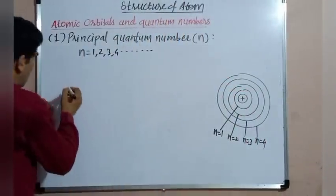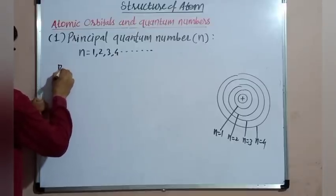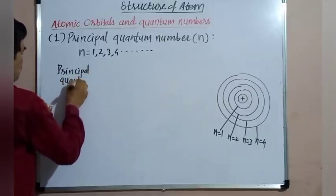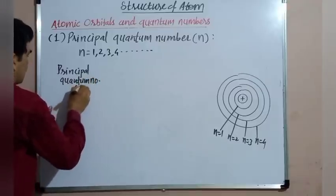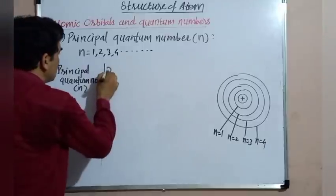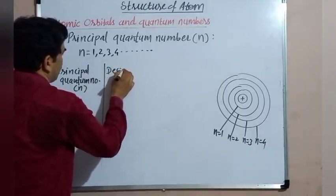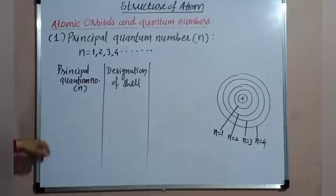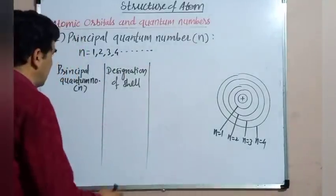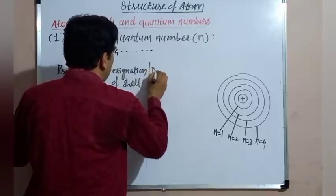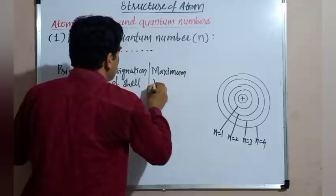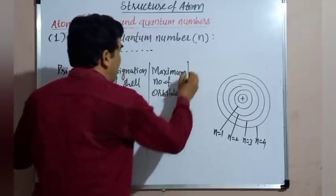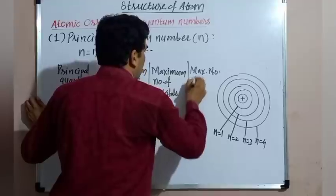These orbits corresponding to the principal quantum numbers 1, 2, 3, 4 are also designated by capital letters. The principal quantum number n, then designation of the shell — that is the symbol for the shell — which orbit is denoted by which symbol. Then the maximum number of orbitals in that shell, and the maximum number of electrons.